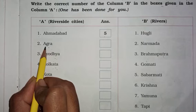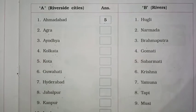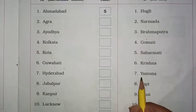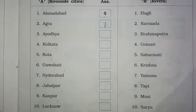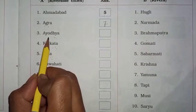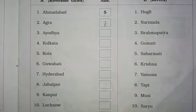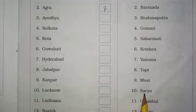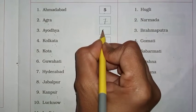Then, second देखो: Agra — वो कौनसी river के पास आया हुआ है — यमुना। तो यहाँ पे seven number लिखना है। Then 3, Ayodhya — कौन सी river के पास आया हुआ है — Sarayu River. तो यहाँ पे हमें 10 लिखना है।